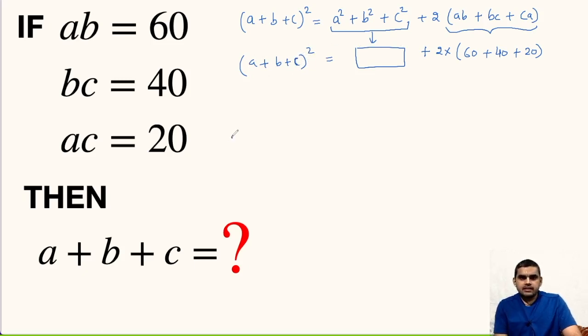we know that A square can be written as AB times AC upon BC. See, B and B will get cancelled, C and C will get cancelled and you will be left with A square.